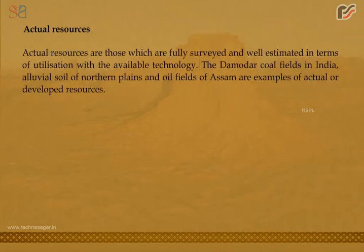Actual resources are those which are fully surveyed and well estimated in terms of utilization with the available technology. The Damodar coal fields in India, alluvial soil of the northern plains, and oil fields of Assam are examples of actual or developed resources.